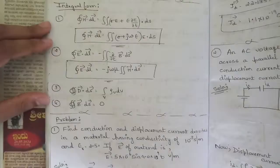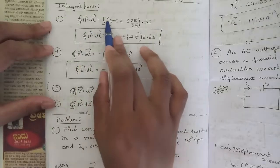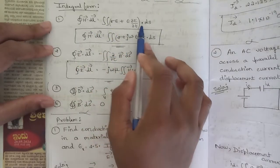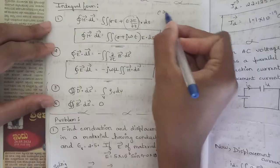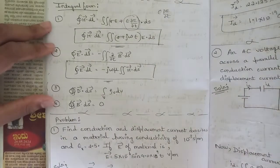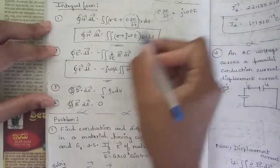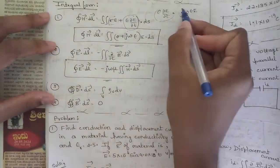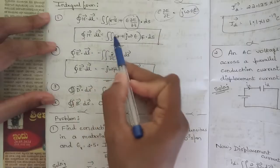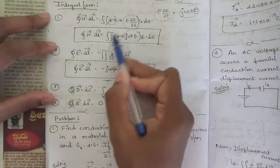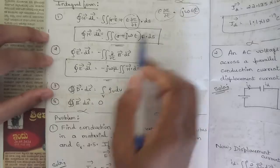Now let's check the integral form. The first equation from Ampere's law is: line integral of H·dl = surface integral of (σE + ε·∂E/∂t)·dS. For time-changing fields, replace ε·∂E/∂t with jωεE (as derived in point form). Taking E common from σE and jωεE, the modified integral form becomes: line integral of H·dl = surface integral of (σ + jωε)E·dS.